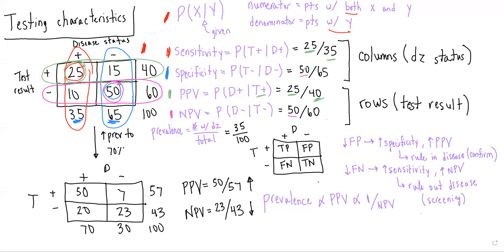For sensitivity and specificity, we are looking at the columns — using disease status in the denominator. For PPV and NPV, we're really looking at the rows, or the test result status, to determine the denominator. Prevalence is simply the number of patients with the disease over the total number of patients in the sample — in this case, 35 patients with disease over 100 people, so 35 over 100.